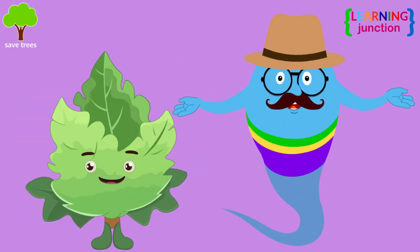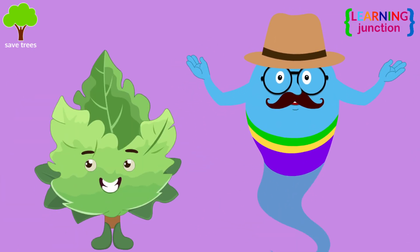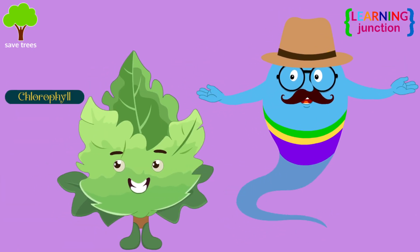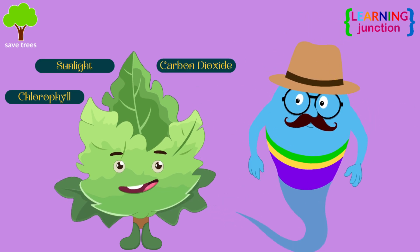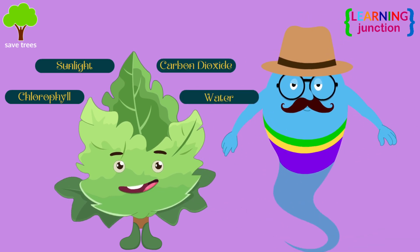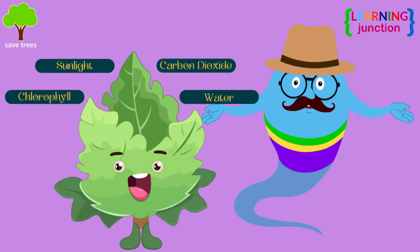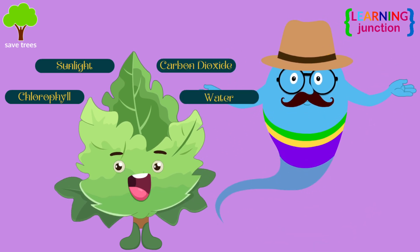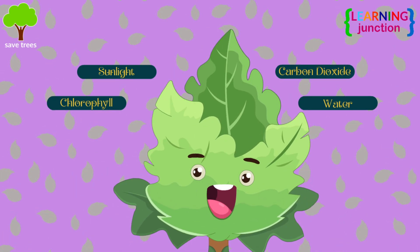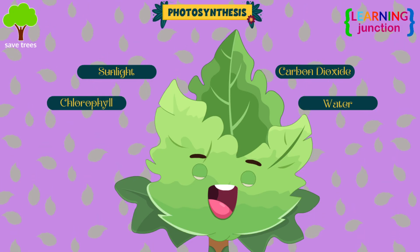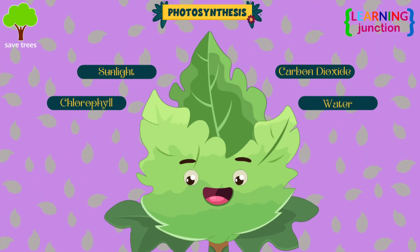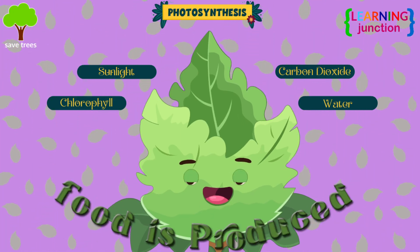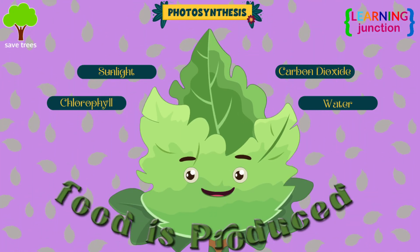Leaves require the ingredients chlorophyll, sunlight, carbon dioxide, and water to produce food for the plant. The process is called photosynthesis, through which food is produced.